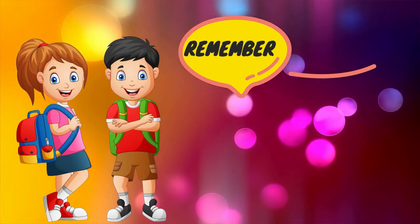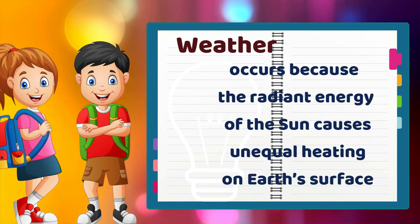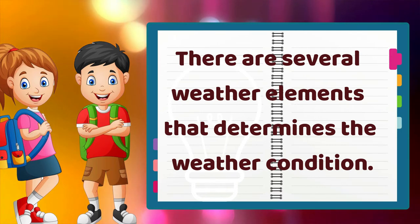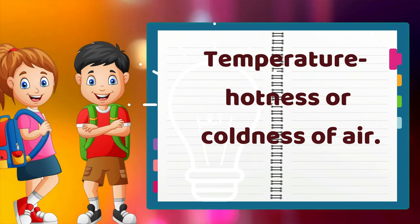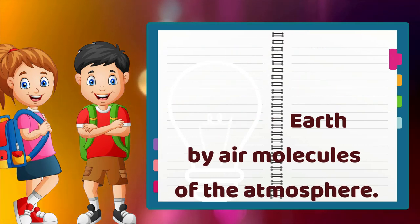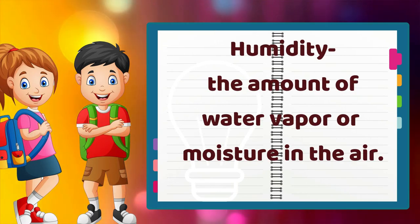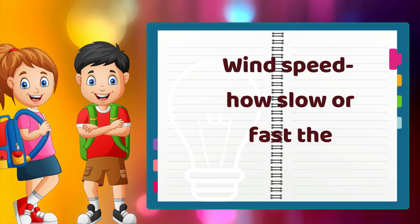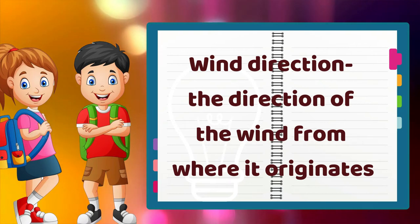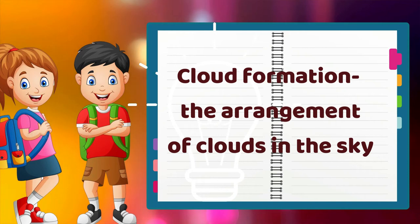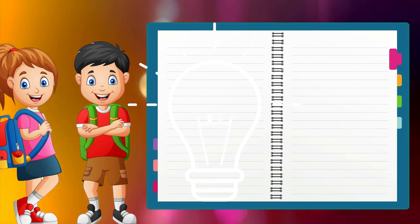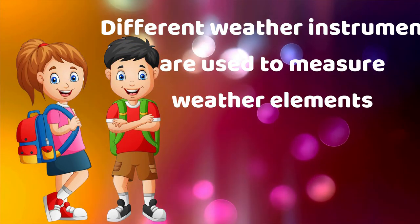Remember the following: Weather occurs because the radiant energy of the sun causes unequal heating on Earth's surface. There are several weather elements that determine the weather condition. Temperature is the hotness or coldness of air. Air pressure is the force exerted against Earth by air molecules of the atmosphere. Humidity is the amount of water vapor or moisture in the air. Wind speed is how slow or fast the wind blows. Wind direction is the direction from which the wind originates. Cloud formation is the arrangement of clouds in the sky. Precipitation means any form of water that falls from clouds to the ground.